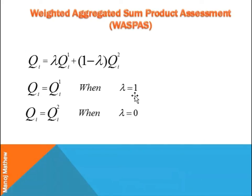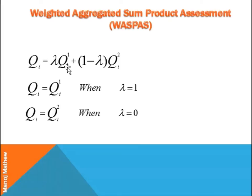When the value of lambda is 1, the Qi2 term gets eliminated and the value of Qi is equivalent to Qi1. When lambda is 0, the Qi1 term gets eliminated and the value of Qi is equivalent to Qi2. That's all for today, thank you.